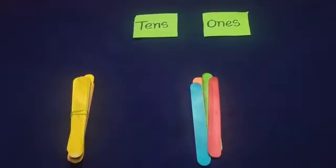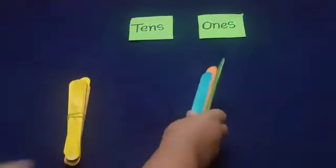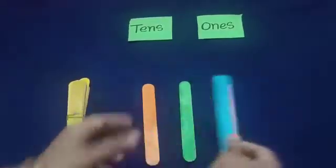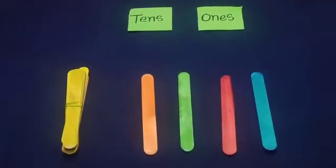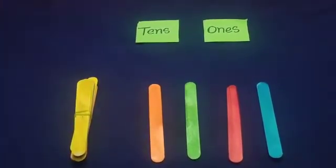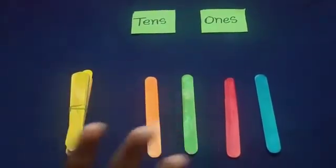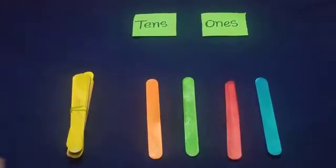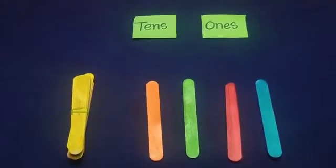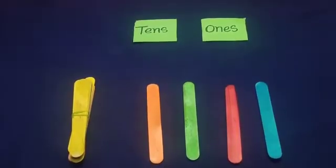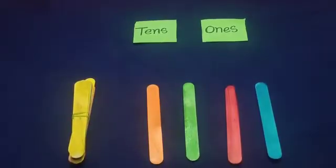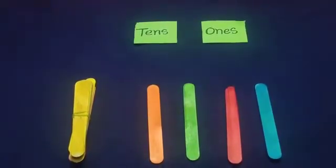Now, let us see how many ice cream sticks are remaining. One, two, three, four. Can we make it as a bundle? No. When can we make it as a bundle? Only when we have ten ice cream sticks. If we are not having ten ice cream sticks, we are not able to make it as a bundle. So these four sticks stand alone.